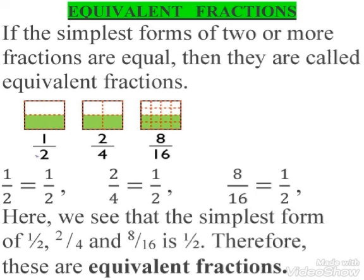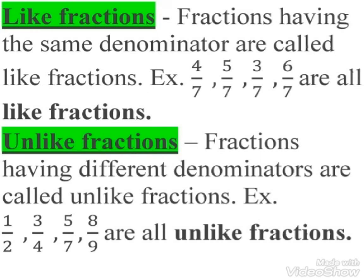Like fractions. Fractions having the same denominator are called like fractions. Fractions having different denominators are called unlike fractions. For example, 1 upon 2, 3 upon 4, 5 upon 7, and 8 upon 9 are all unlike fractions.